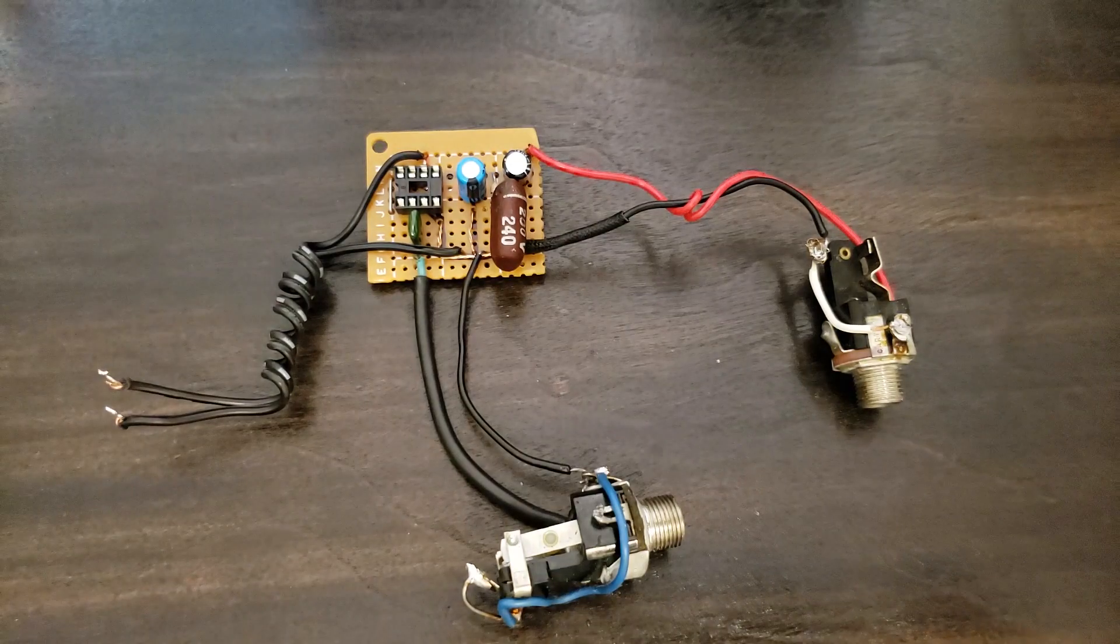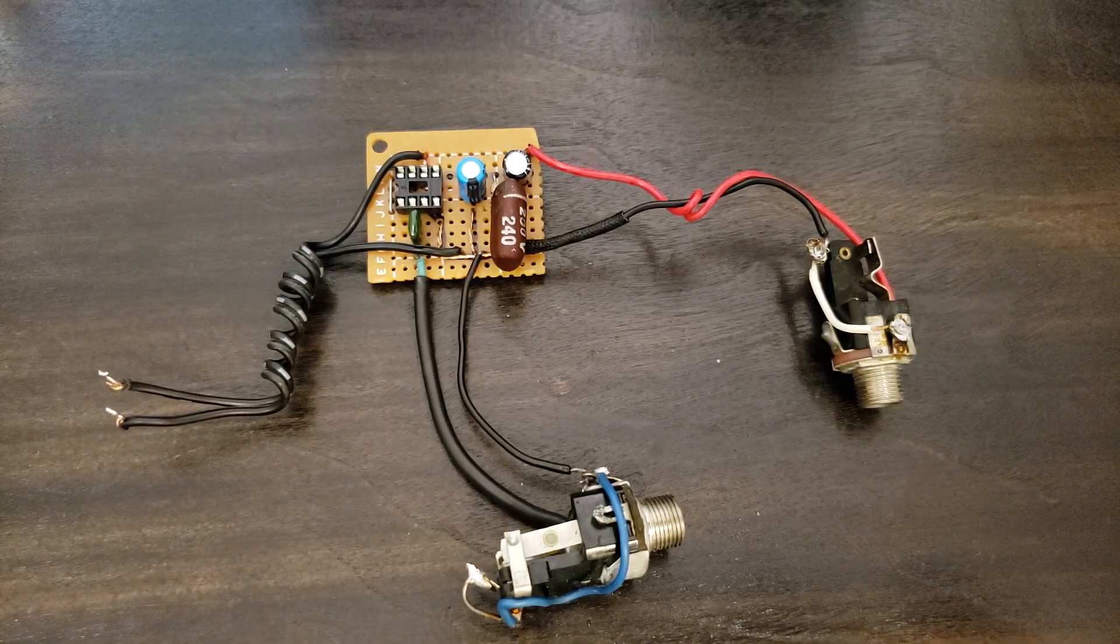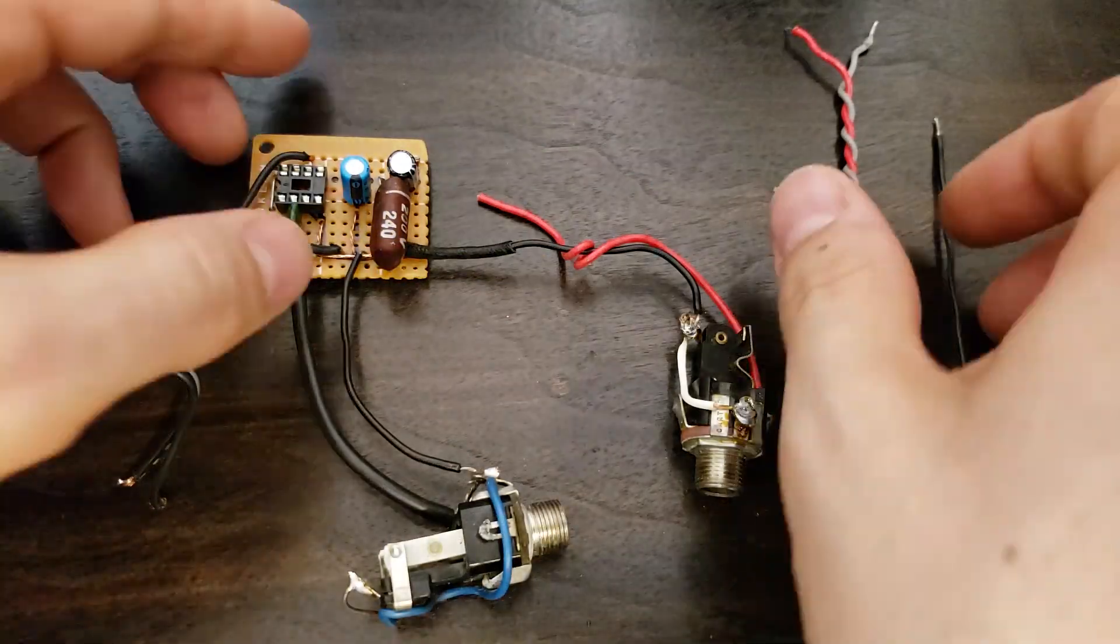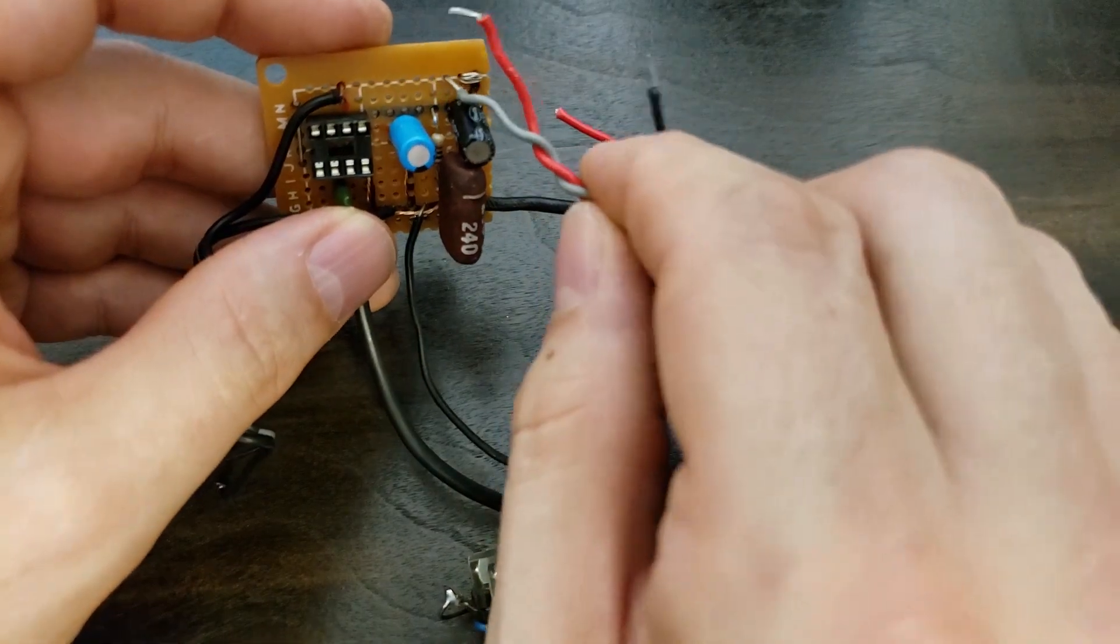This is the basic working amp. In this case, the volume would be controlled by your guitar's volume knob. If you're using a rheostat volume control, we'll install it now.